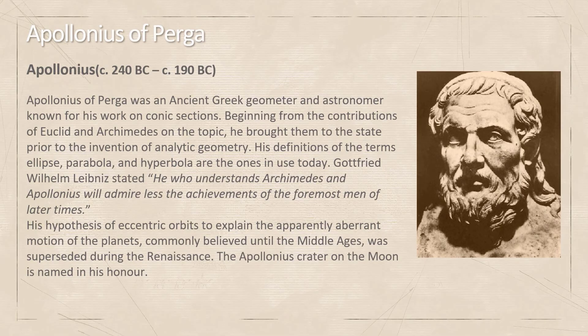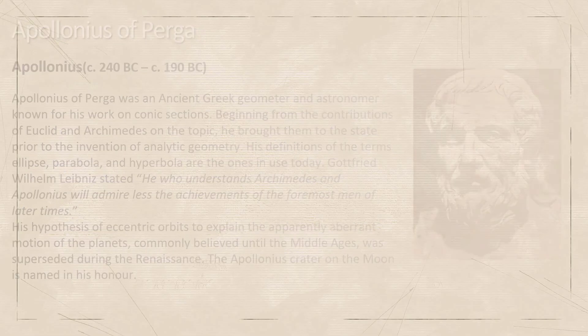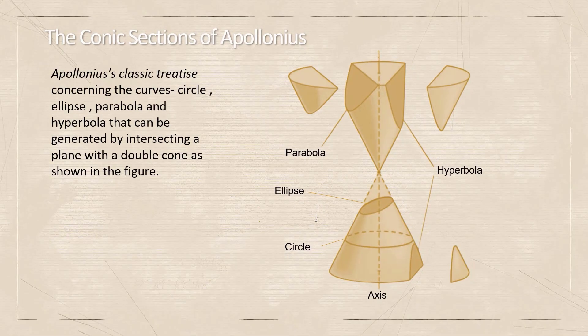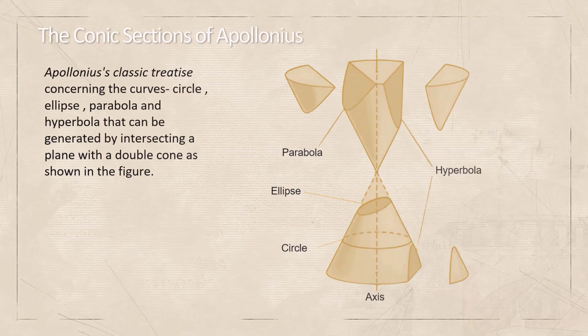Apollonius of Perga was an ancient Greek geometer and astronomer, known for his work on conic sections. His definitions of the terms ellipse, parabola, and hyperbola are the ones in use today. This is the conic section of Apollonius, where we can find his classic treatise. The conic section results from intersecting a plane with a double cone, as shown in the figure.